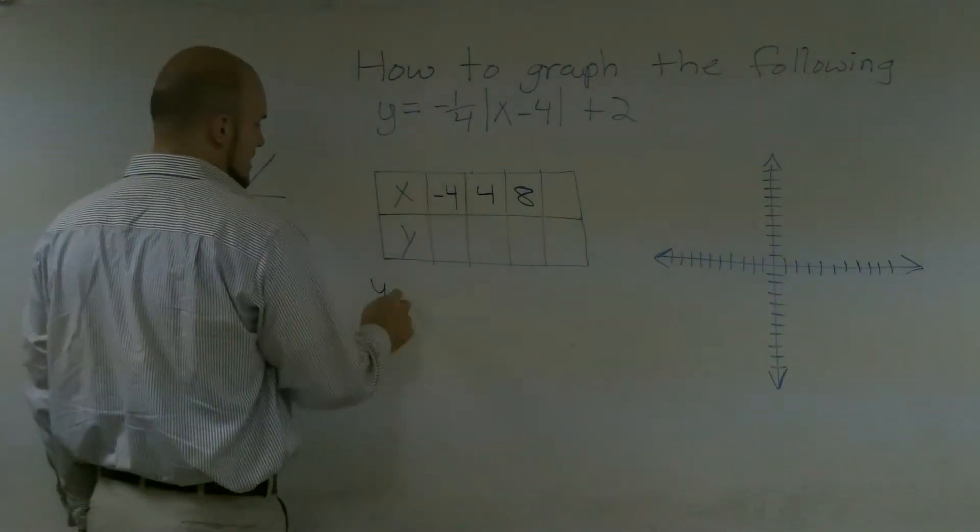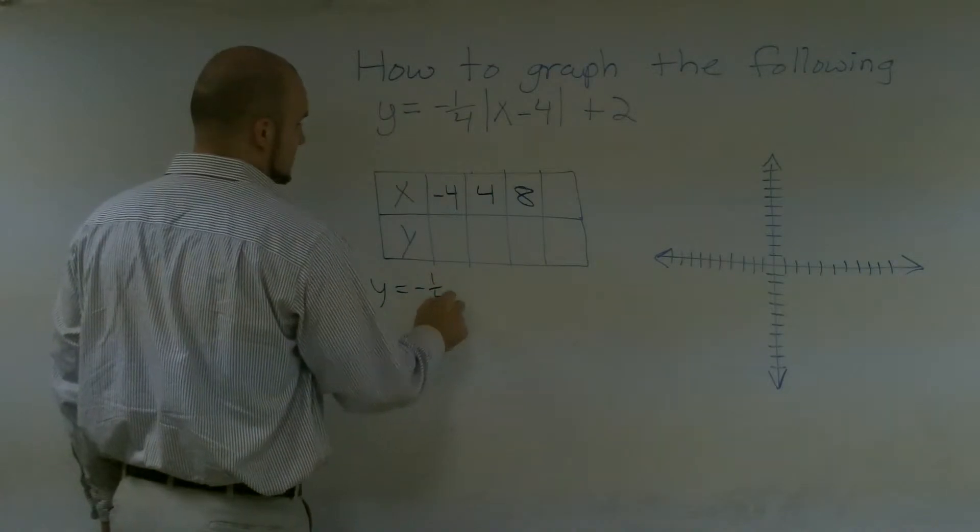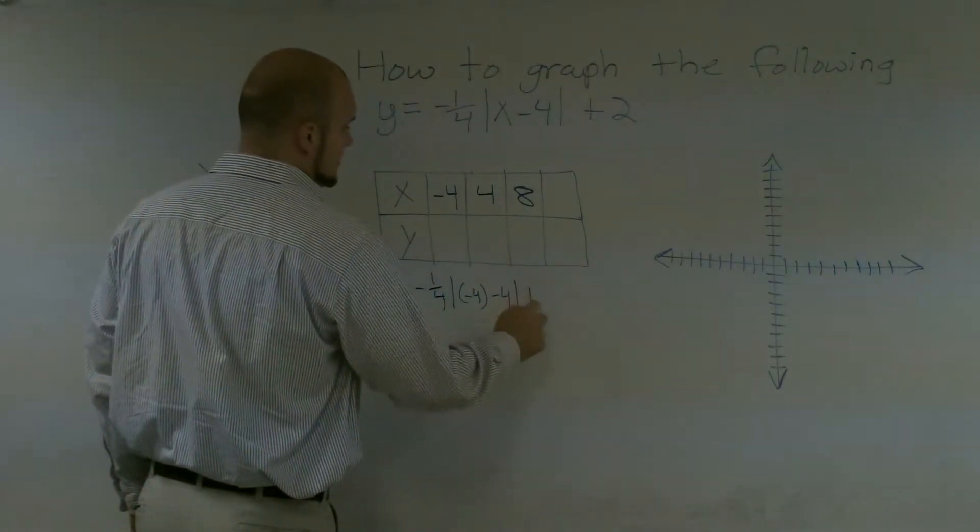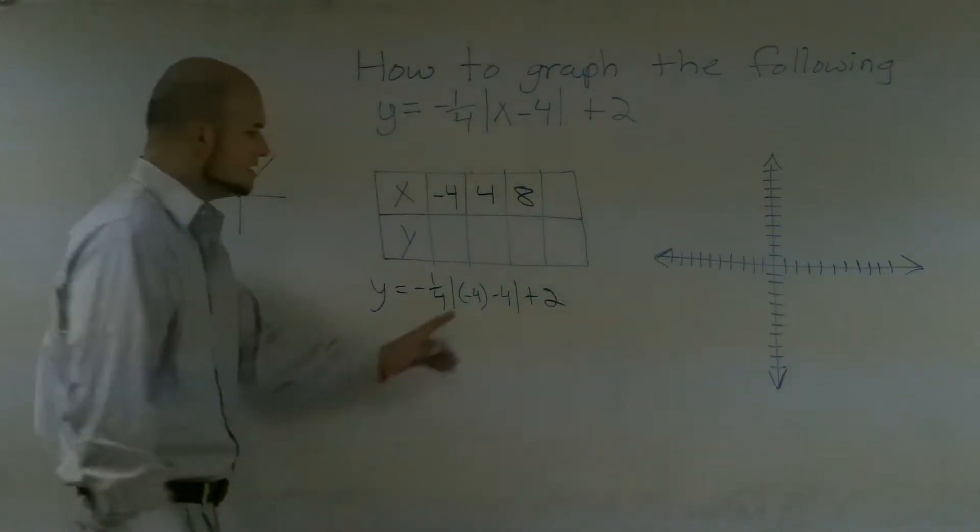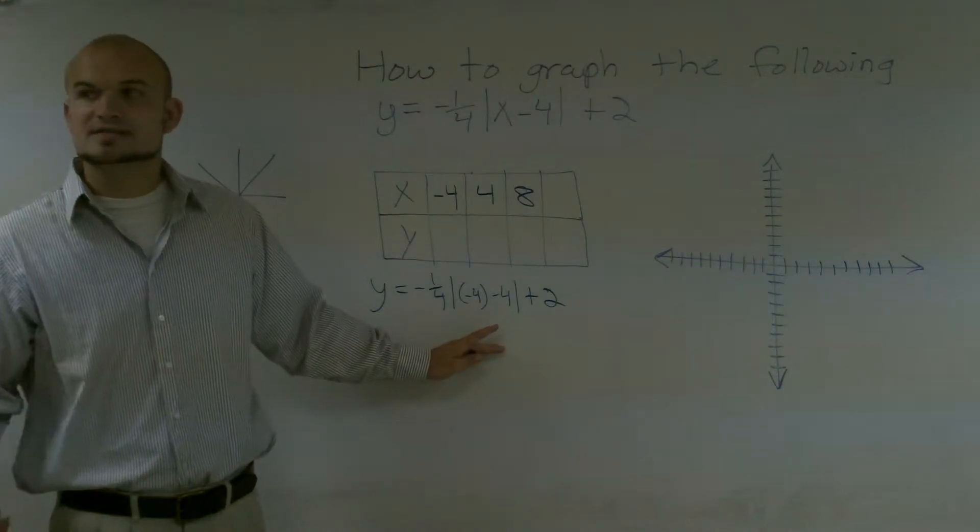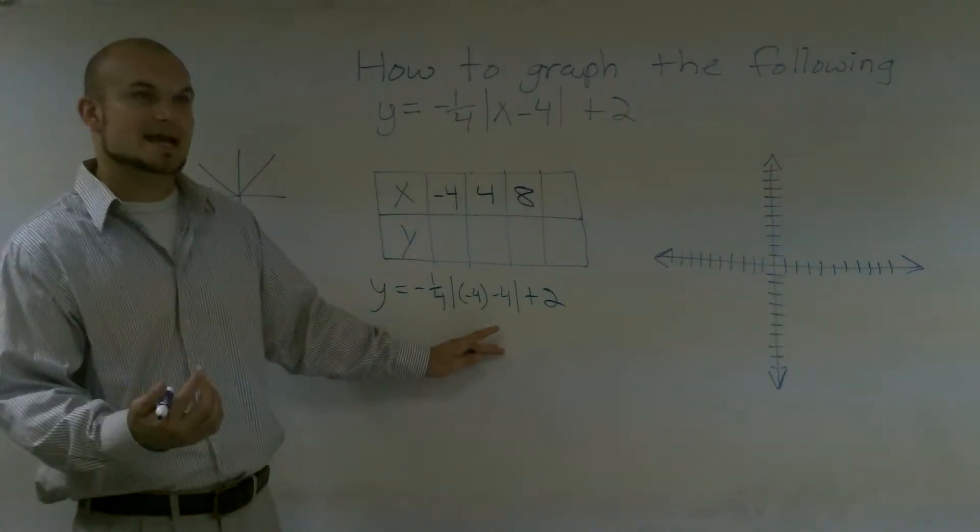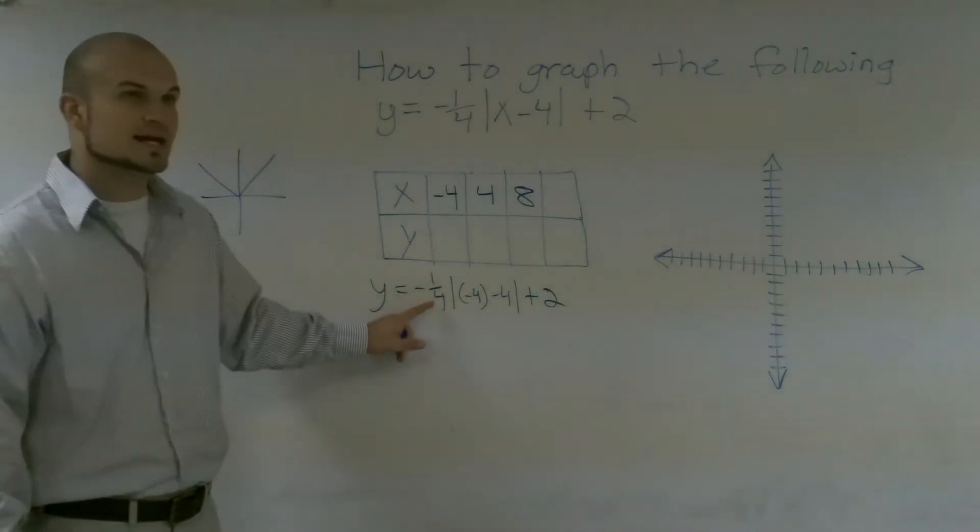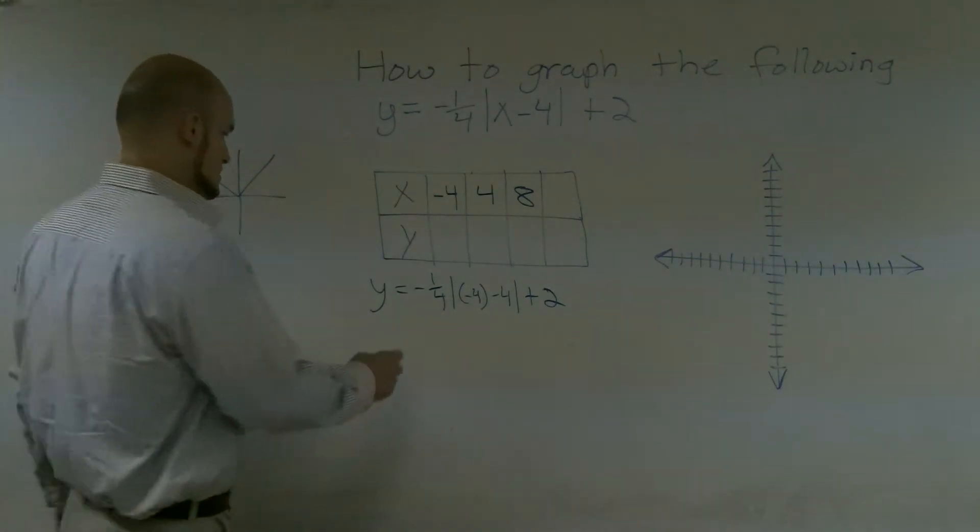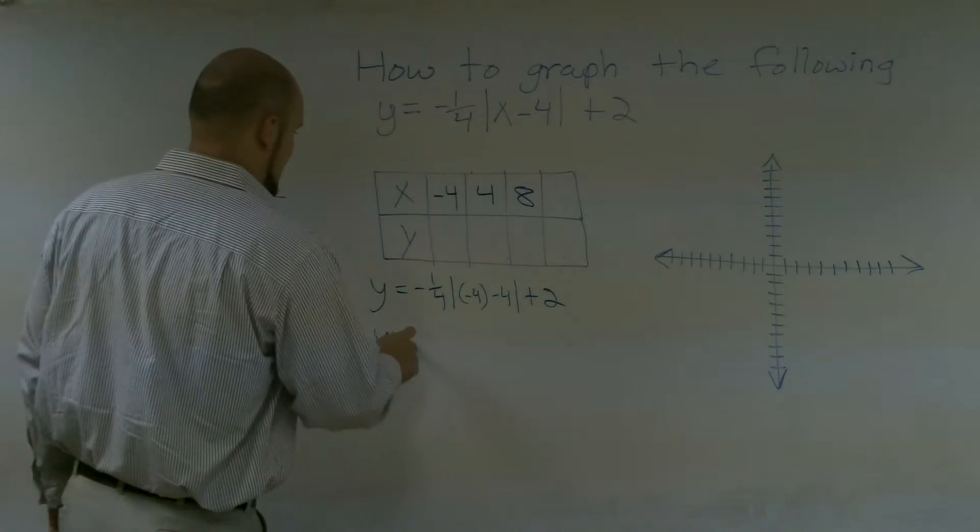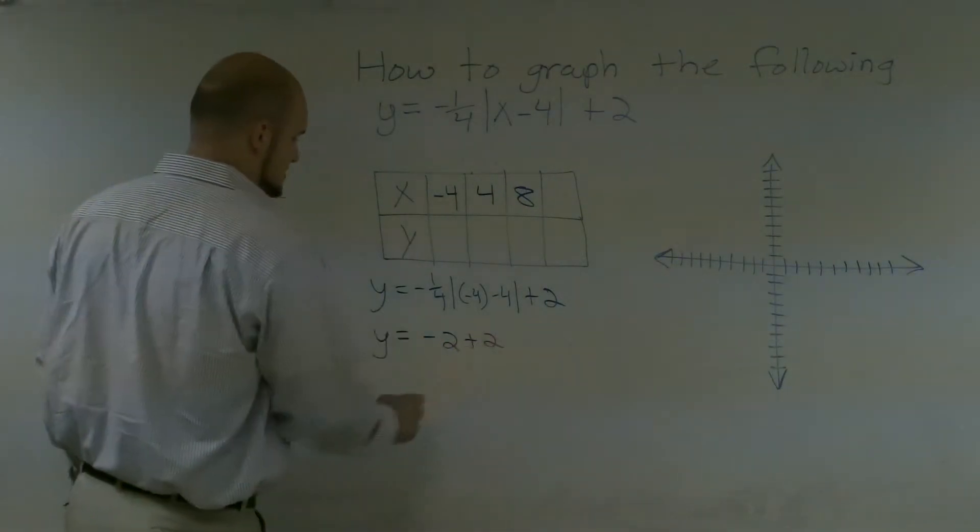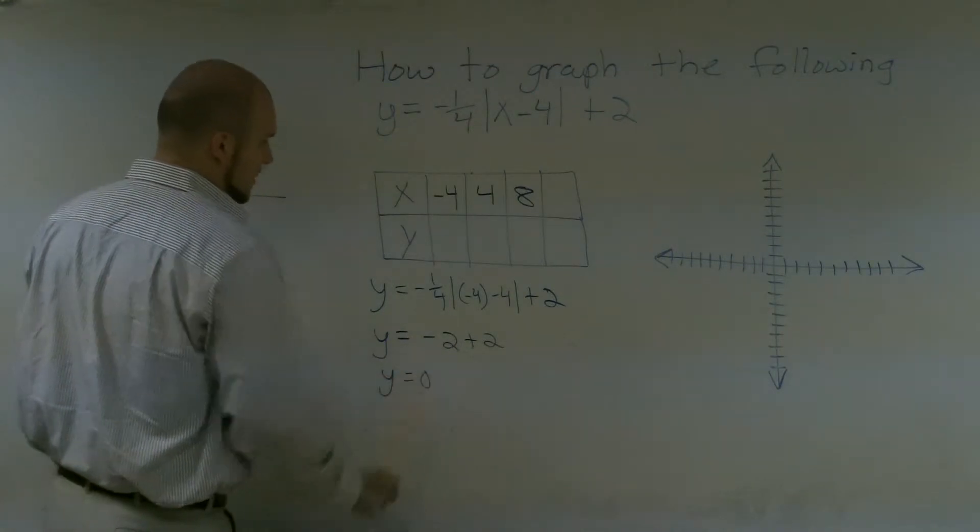So if I do the first one, y equals negative 1/4 times negative 4 minus 4 absolute value plus 2. Negative 4 minus 4 is negative 8 absolute value. The absolute distance of negative 8 from 0 is going to be 8. Then 8 times negative 1/4 is going to be negative 2. So we'll have y equals negative 2 plus 2. y equals 0.